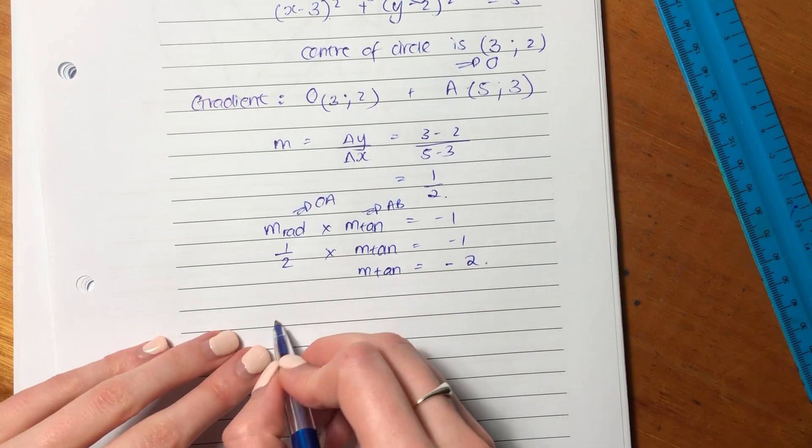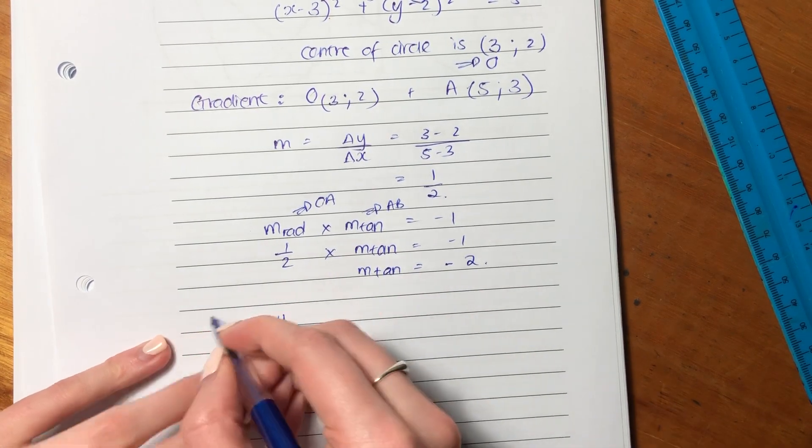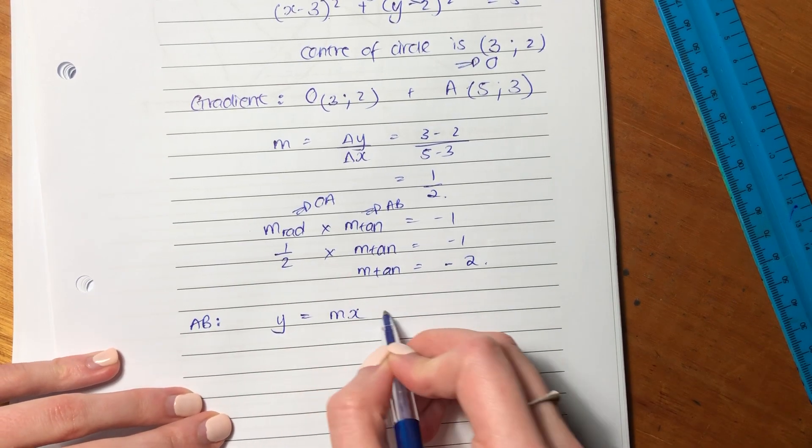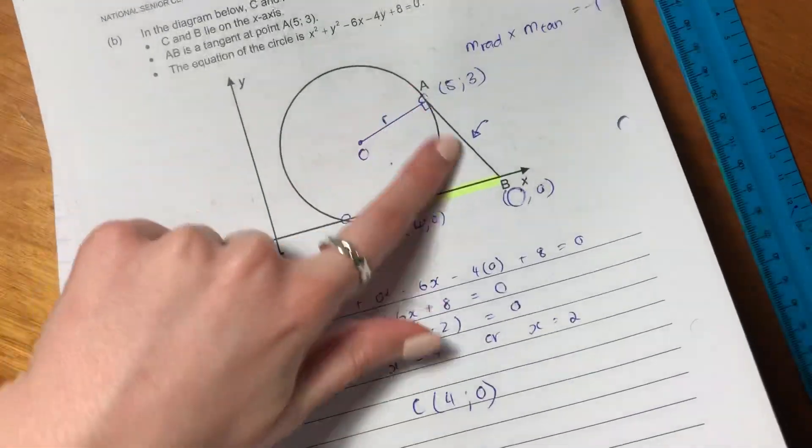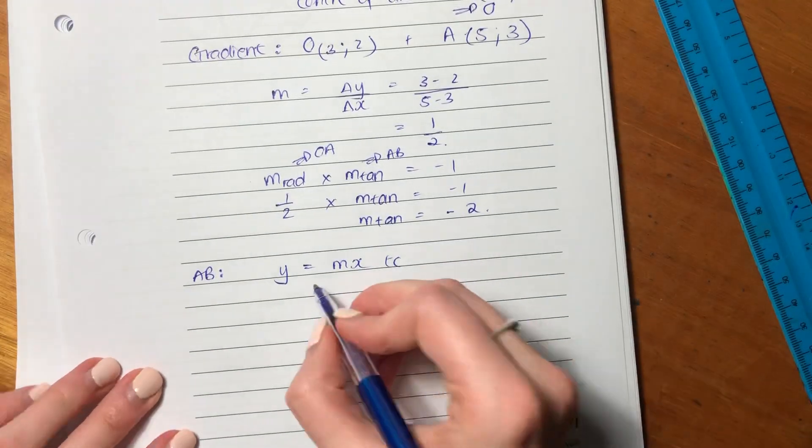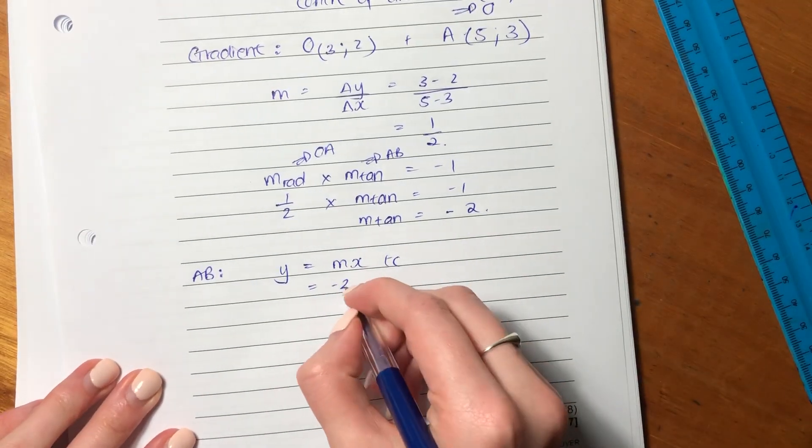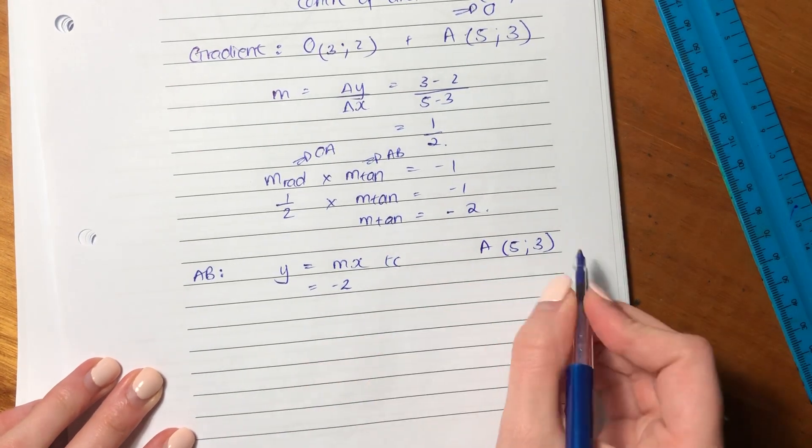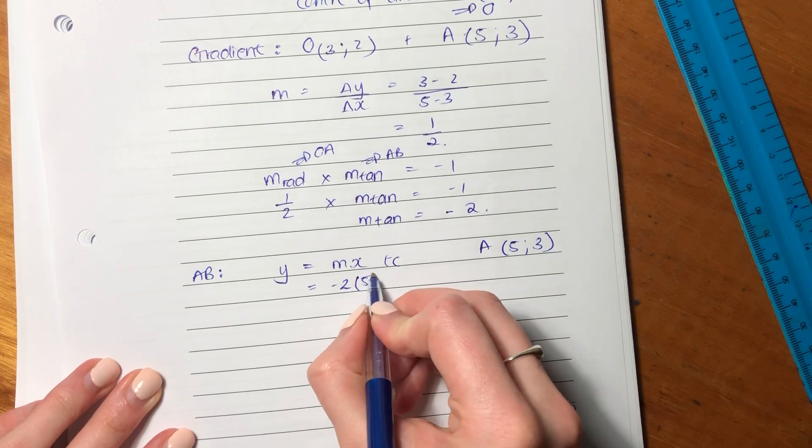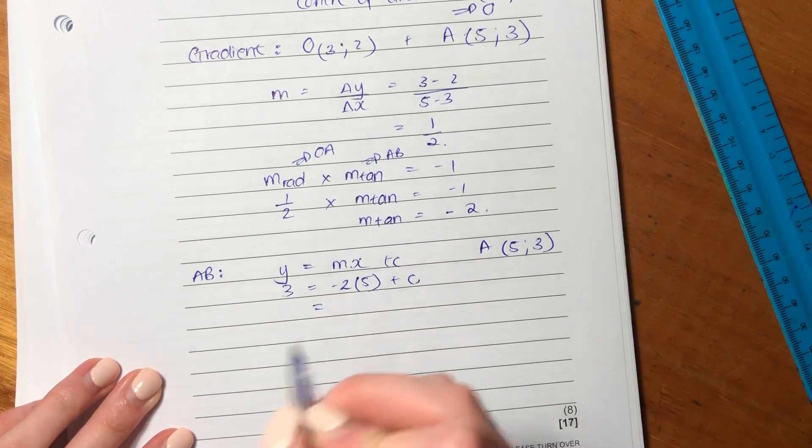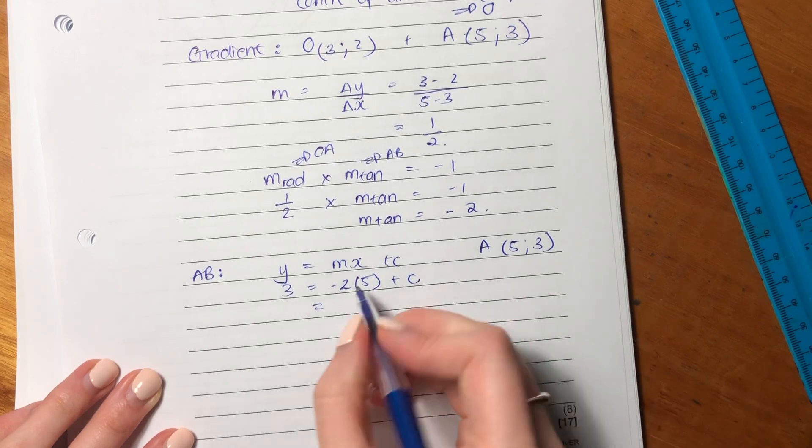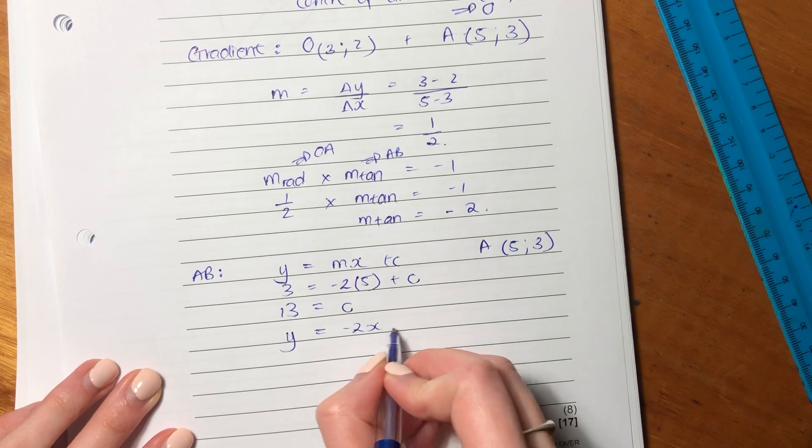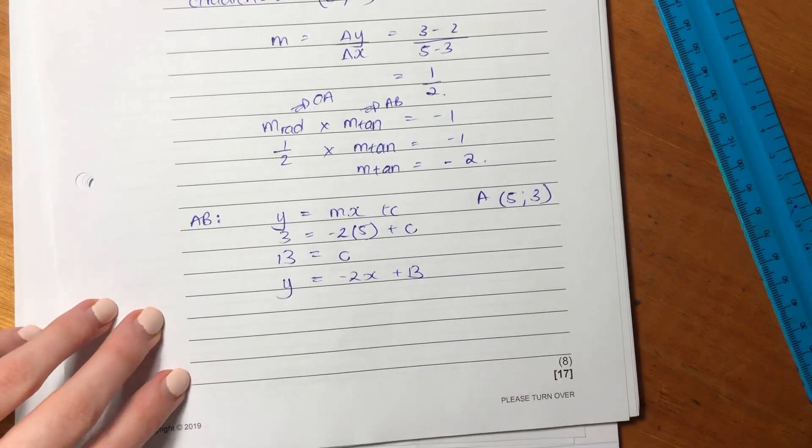So now we've got the gradient. Let's think about, now we're going to say AB, we're looking at the line AB. So we know y equals mx plus c. It's a straight line. Tangent is a straight line. We say, okay, the gradient is negative 2. We know that A sits on that line. So sub A in. And that can give us our value for c, which is 13. So our general formula is this for AB.